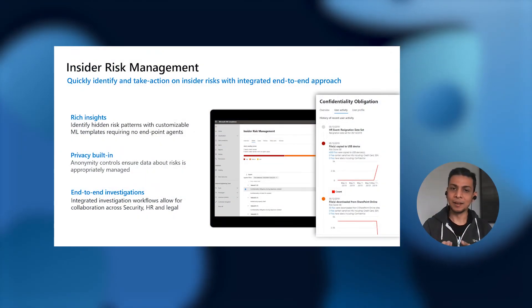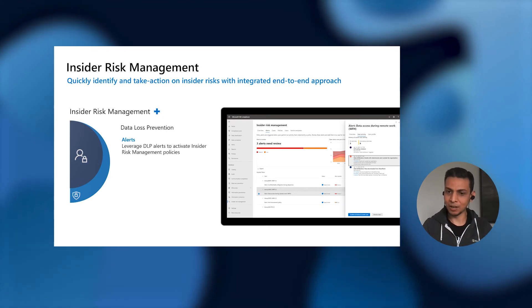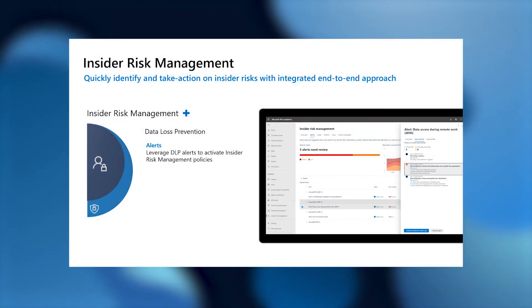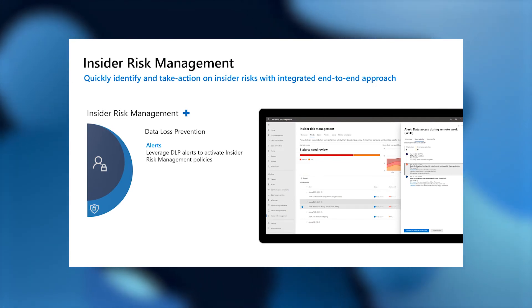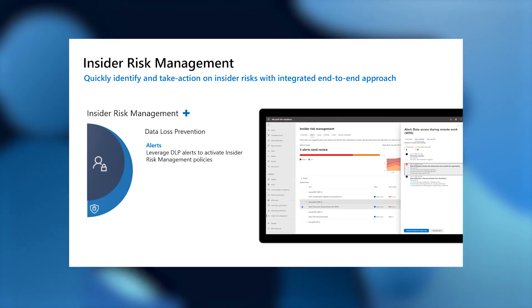Customers really appreciate our ability to integrate natively with other Microsoft 365 solutions. For example, we leverage data loss prevention alerts to activate certain Insider Risk Management policies. If a DLP alert fires, we can curate that in and use it as a potential starting point to see if a user is conducting risky activity related to a larger data leak or data theft. We treat it as a signal — a starting point.